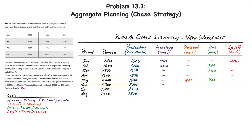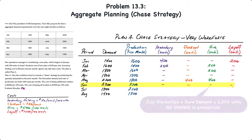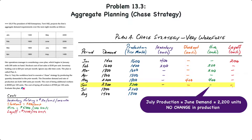In June, production is 2,200 units and demand is 2,200 units. Since there is no beginning inventory and production equals demand, there is no ending inventory and no stockouts — exactly enough is available. July's production will equal June's demand of 2,200 units. Since the company has already ramped up to 2,200 units in June, no additional workers need to be hired or laid off.